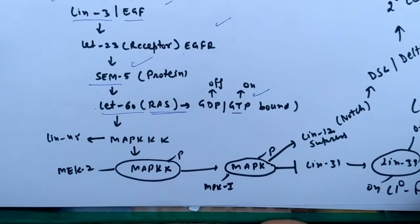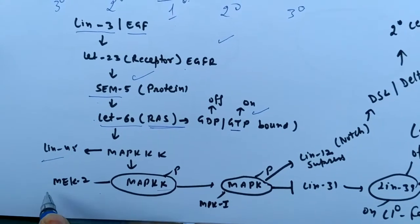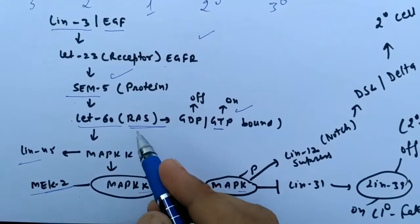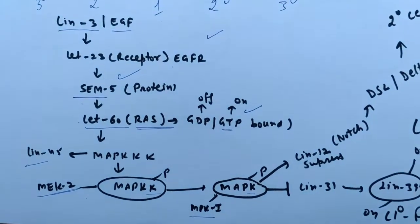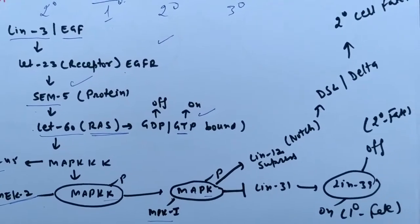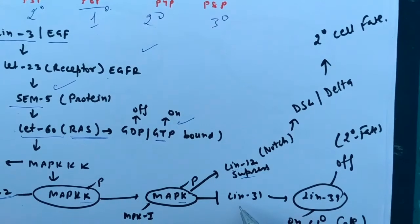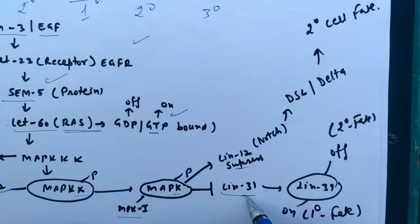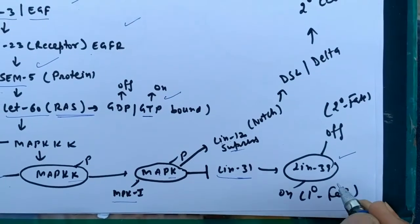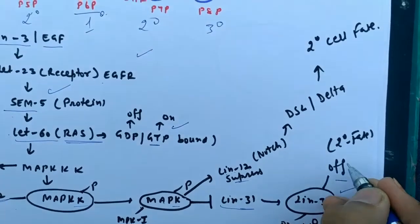It further activates the MAP kinase kinase kinase, LIN-45, which further activates MAP kinase kinase, MEK-2. The previous protein phosphorylates the advancing protein. The phosphorylation makes it switch from off to on. The MAP kinase kinase suppresses LIN-12 and activates LIN-31, which activates LIN-39. When LIN-39 is switched on, it shows primary fate; when off, it shows secondary fate.